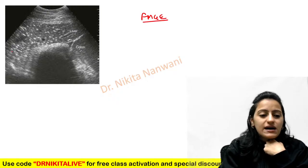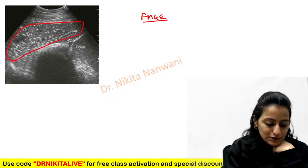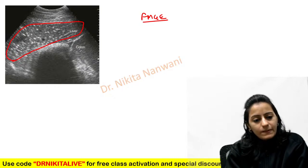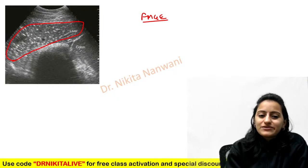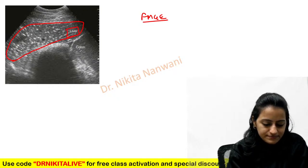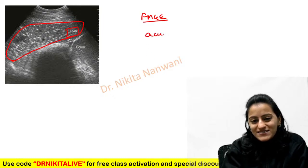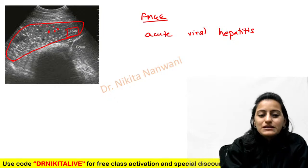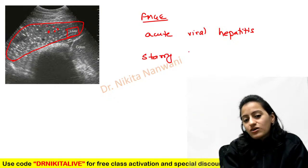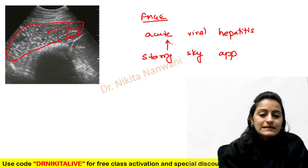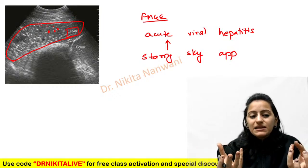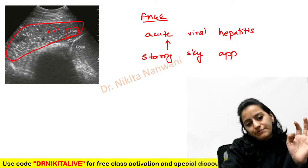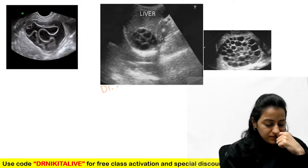Ultrasound image of the liver asked in a previous FMG exam. We see white dots scattered throughout the liver like stars — starry sky appearance — seen in acute viral hepatitis. The liver parenchyma becomes dark while the portal radicals stand out as white dots, giving the starry sky appearance.